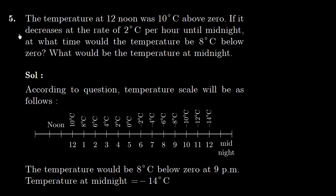Question No. 5. The temperature at 12 noon was 10 degree centigrade above 0. If it decreases at a rate of 2 degree centigrade per hour until midnight, at what time would the temperature be 8 degree centigrade below 0 degree?